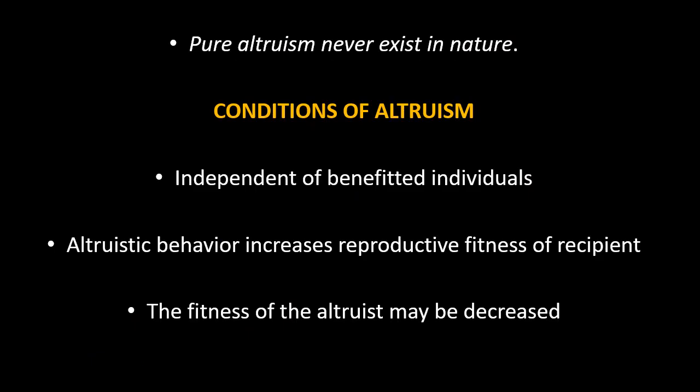Pure Altruism never exists in nature because there should be some sort of selfishness — to ensure the Altruist gene propagates. This is ensured through sharing of genes; the shared genes found in kin are being helped to propagate, so it is a type of selfishness by the Altruist. In evolutionary biology, an organism behaves altruistically when its behavior benefits other organisms at a cost to itself.